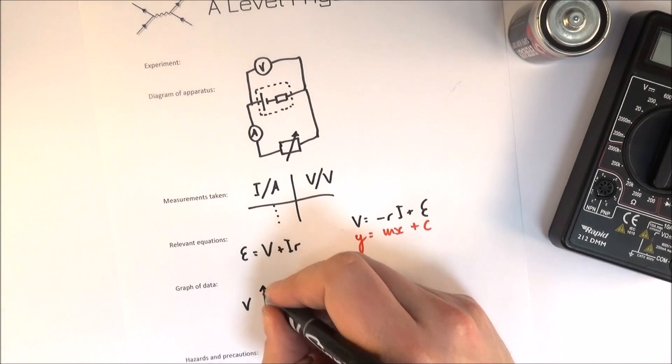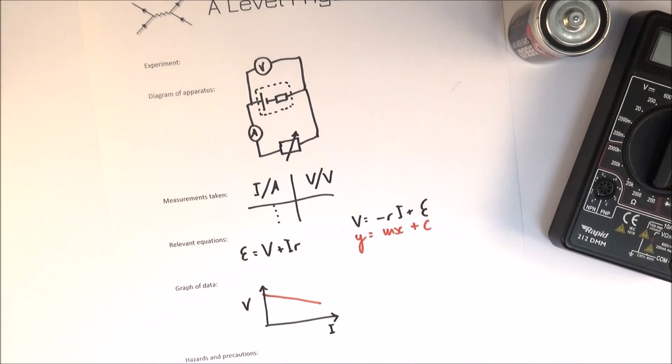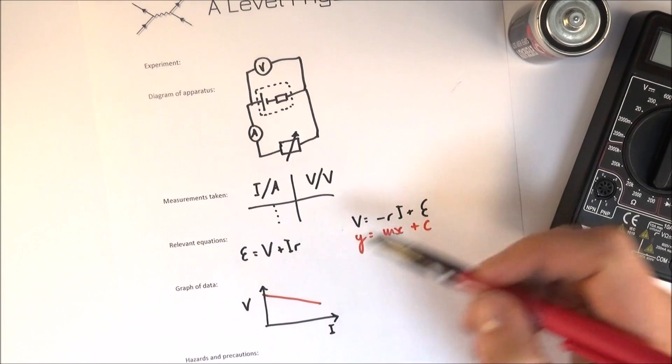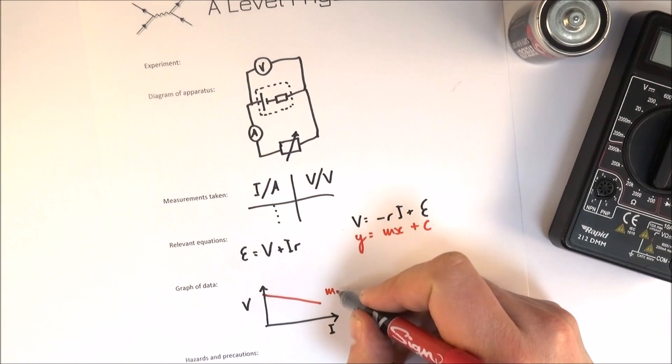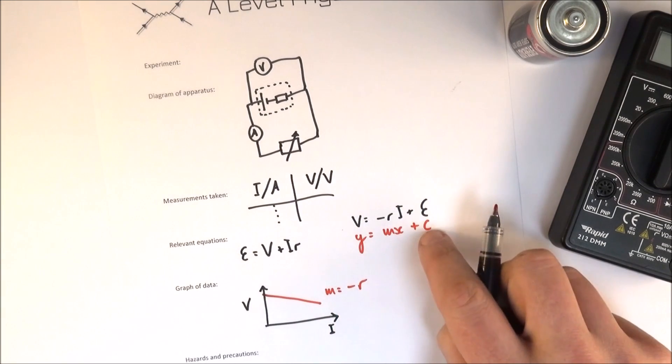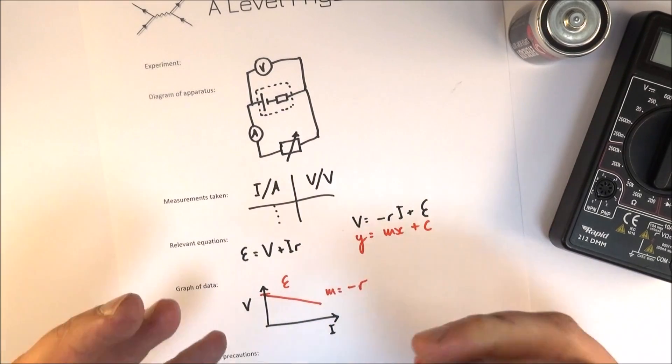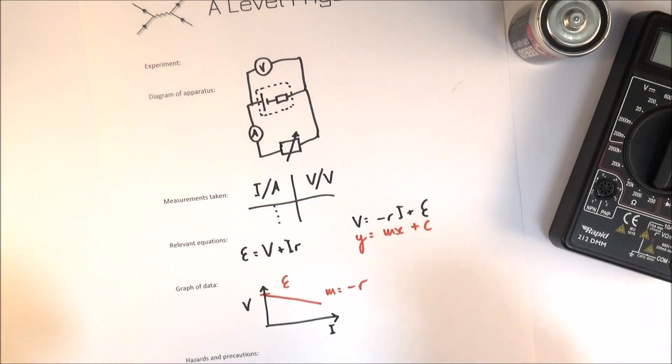You plot V, the potential difference on this axis and the current on this axis and then if you think about Y equals MX plus C, well your Y value is V, your gradient M is equal to minus R, so it's minus the internal resistance and then that means the intercept C up here is equal to the EMF of that cell. Effectively what it would supply if there's actually no current going.